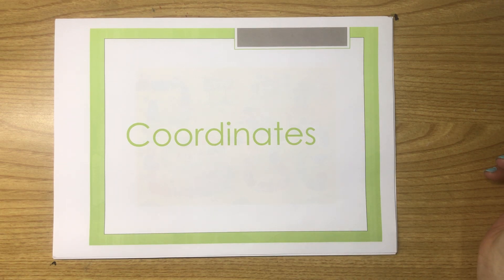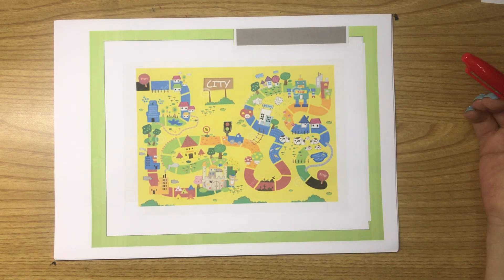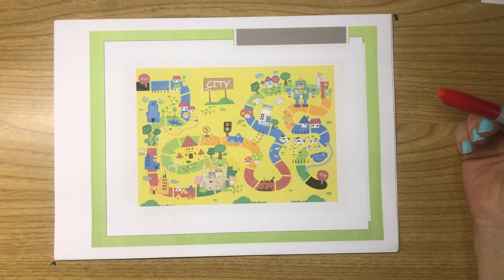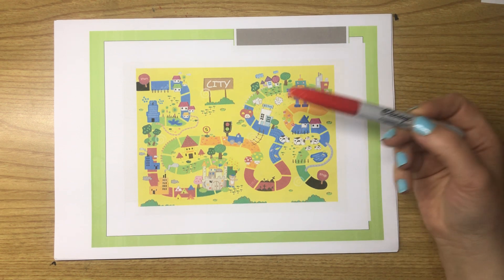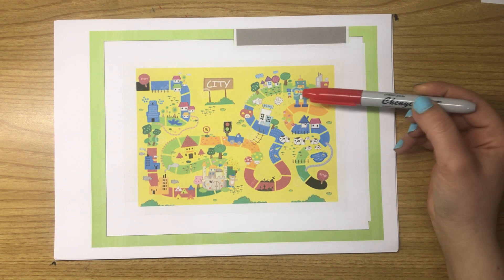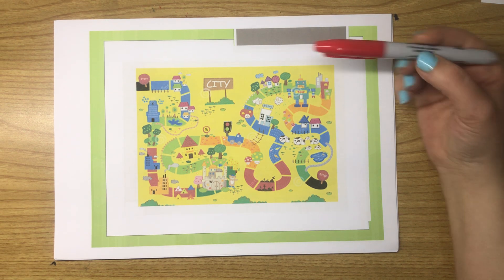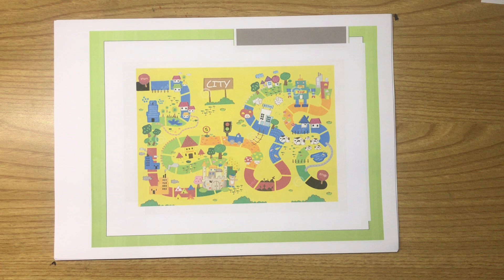The lesson today is coordinates. What are coordinates? Let me give you an example. This is a picture of a city or a game — it has start and stop locations, some buildings, signs, a school, a play area, a farm, and so on. Can you locate exactly where this traffic sign is, or can you locate exactly where the school is?